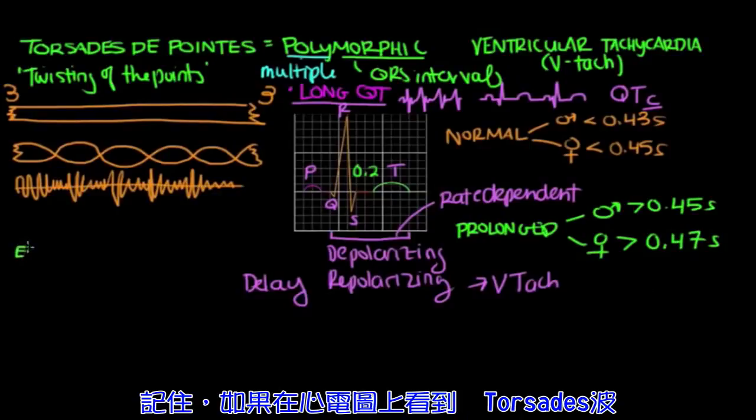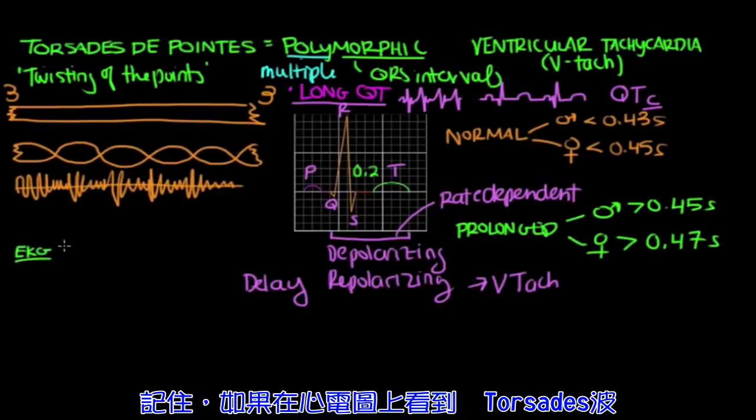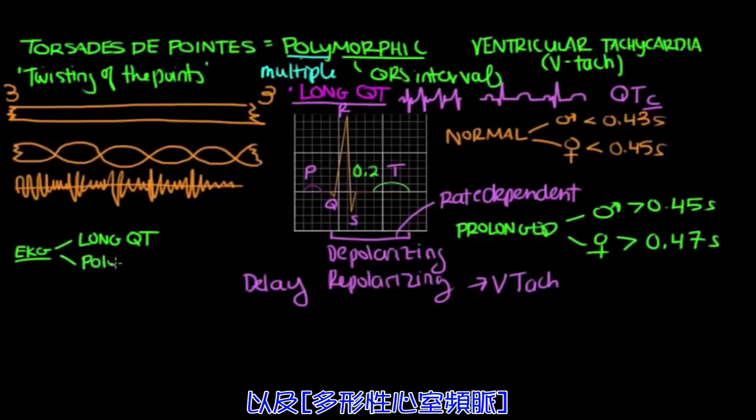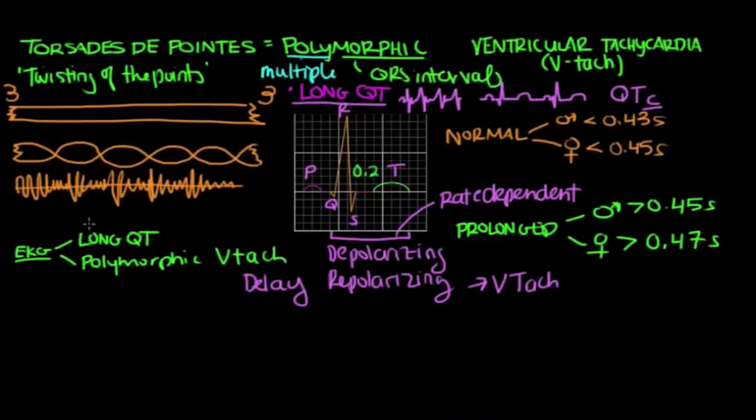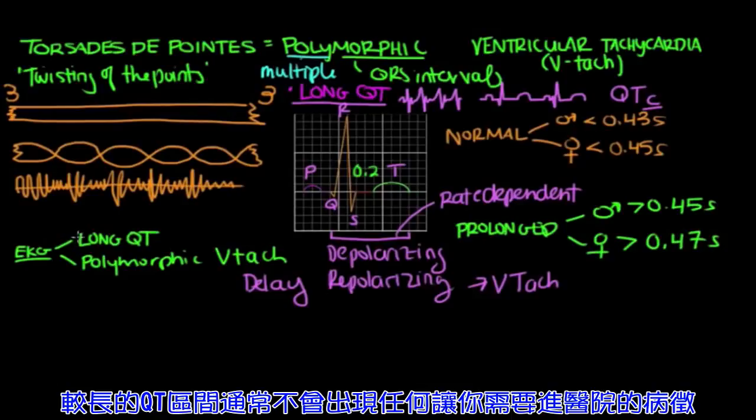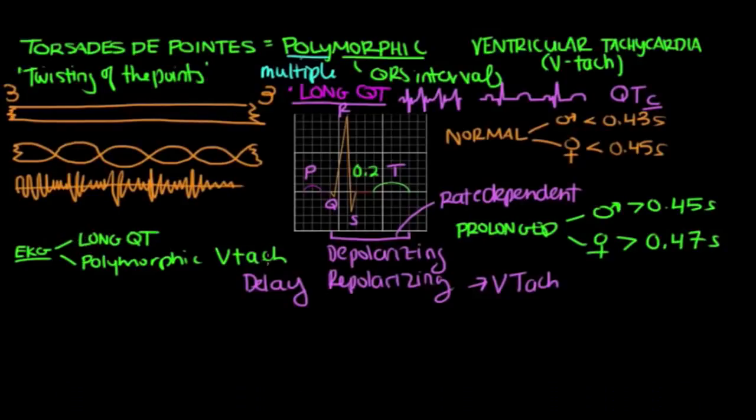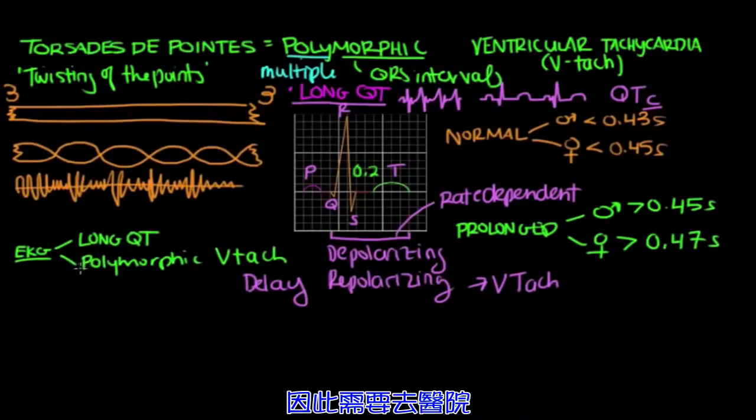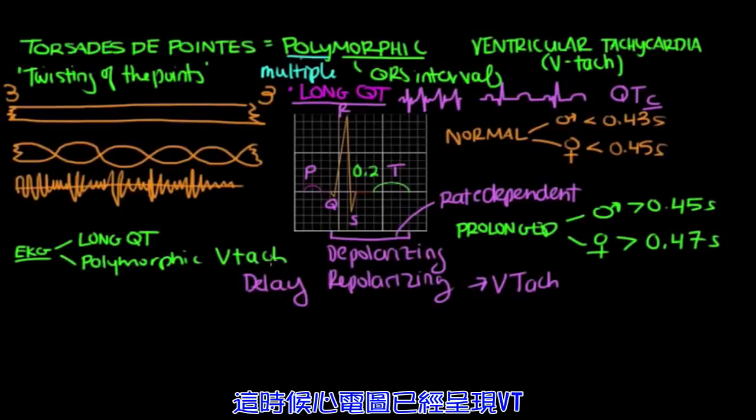So remember, on EKG in someone with Torsades, you're going to have the long QT syndrome, or you're having a prolonged QT, and you're also going to have this polymorphic ventricular tachycardia. So you'll have the long QT and the polymorphic V-tach. Now having a long QT doesn't usually give you symptoms to come into the hospital. However, people who are experiencing ventricular tachycardia might have symptoms where they want to come into the hospital. So often, they present in V-tach.